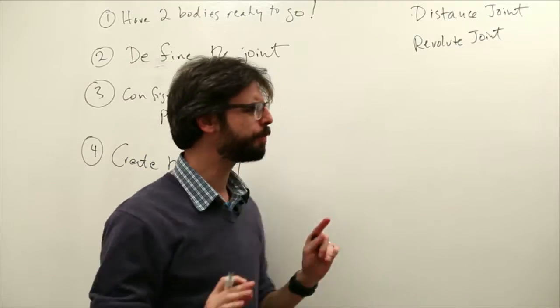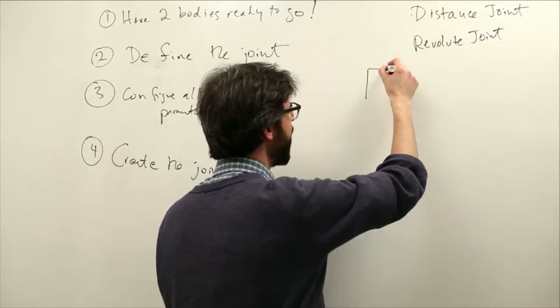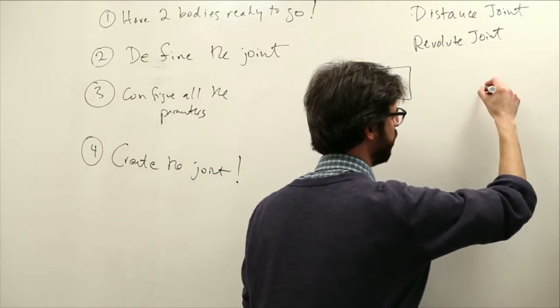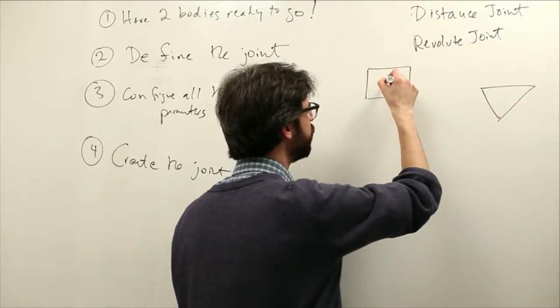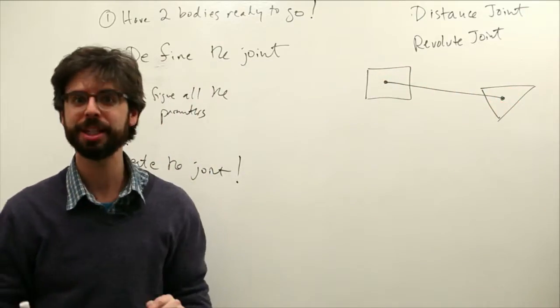So, a distance joint. Now, here's the thing. A distance joint, remember, we had two bodies. Let's say we had a square and a triangle. We combine those with a distance joint, which connects each body together with a given length.